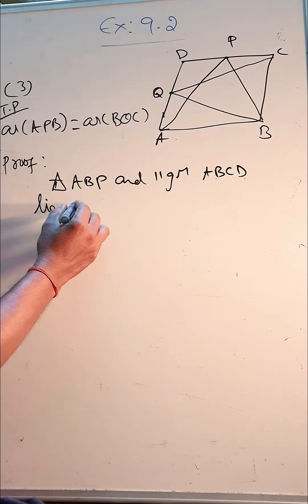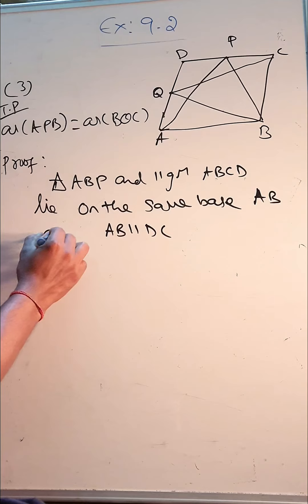Same base of this triangle and parallelogram, same base AB, and AB parallel to DC. So that means we can say area of ABP equal to half into area of ABCD.